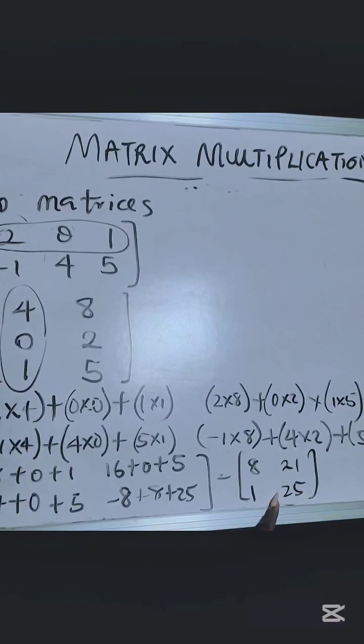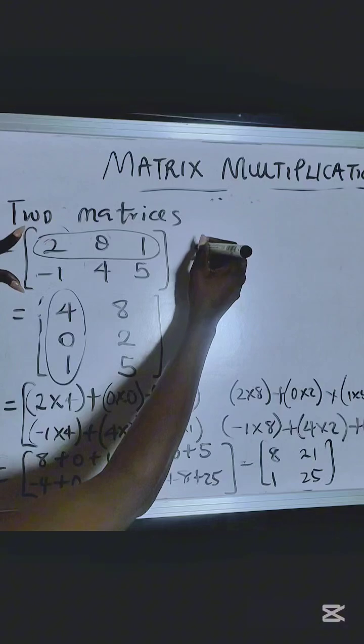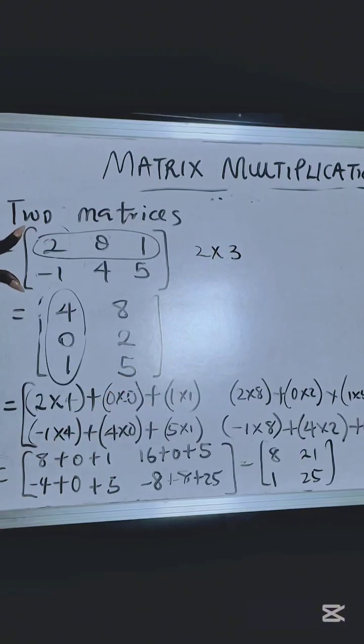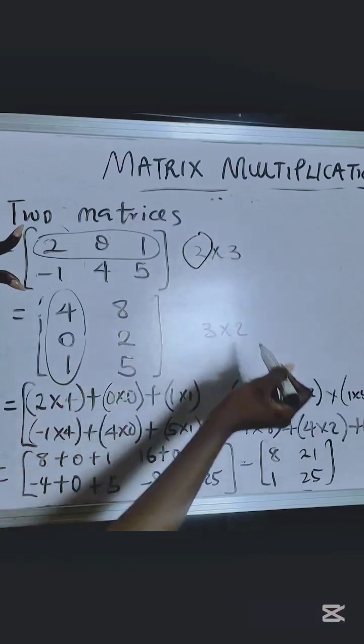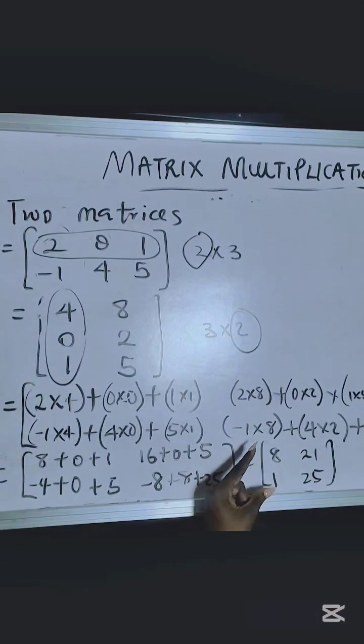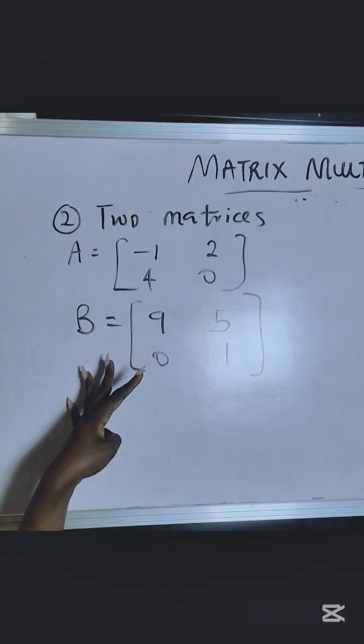Here is the final answer. So that's a 2 by 3 matrix multiplied by a 3 by 2 matrix, ended up giving us a 2 by 2 matrix, which is this. Now I don't know if this can be multiplied.